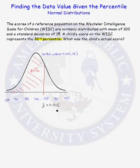Does that make sense? It sure does. We knew that it was going to be close to one standard deviation above the mean. One standard deviation above the mean in terms of z-scores has a z-score of one, and .915 is close to one. Now we need to use this z-score to find the data value that corresponds to it in a normal random variable with mean 100 and standard deviation 15.